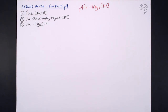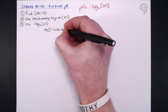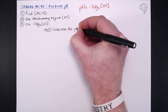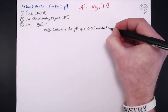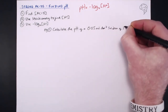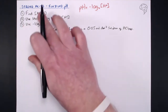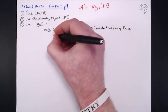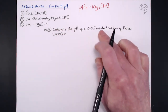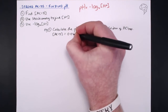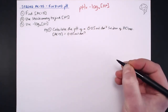Here are a couple of example questions. Calculate the pH of a 0.05 mol dm⁻³ solution of hydrochloric acid. First thing: find the concentration of the acid. The concentration is basically just given in the question — that is 0.05 mol dm⁻³.